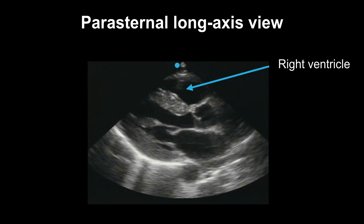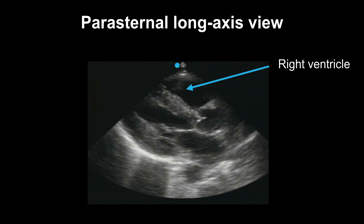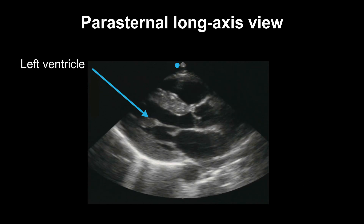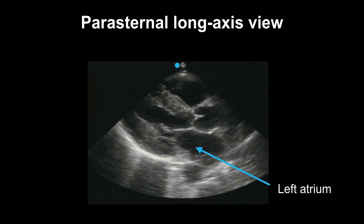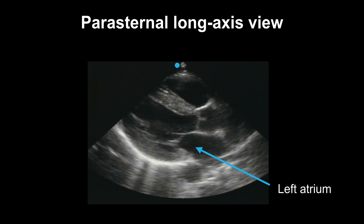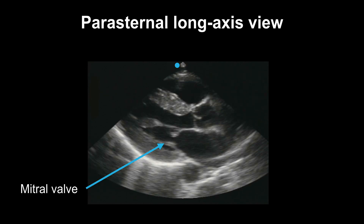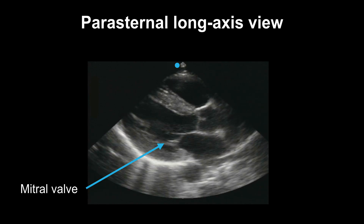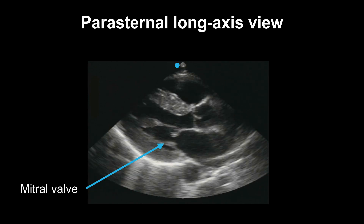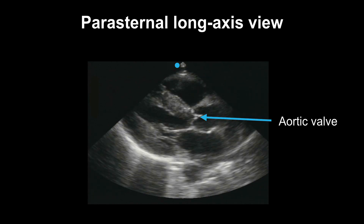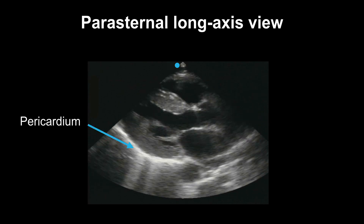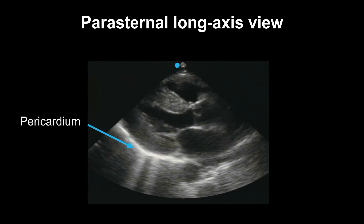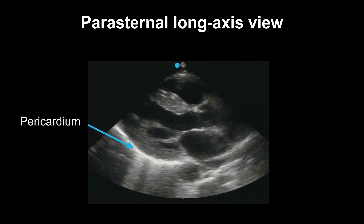Here's a video. Again, your right ventricle on the top, your left ventricle, your left atrium, your mitral valve with the anterior and posterior leaflets, and your aortic valve. Don't forget that your bright white pericardium will be surrounding your heart.